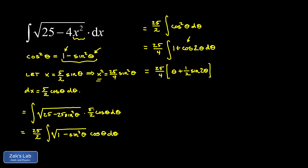The antiderivative of 1 is just theta, and the antiderivative of cosine 2 theta is 1 half sine 2 theta. That 1 half accounts for what the chain rule does — differentiating 1 half sine 2 theta gives cosine 2 theta times 2 from the chain rule, and the 2 cancels the 1 half. The indefinite integral is complete, so we add a plus c. But since our original integral was in terms of x, we need to express the final answer in terms of x as well.